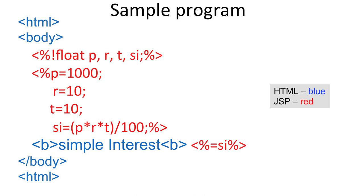After calculating the simple interest, we display it. The JSP parts are shown in red and the HTML parts in blue to differentiate them. Finally we write <%= si %> to display the calculated simple interest value. The body and HTML tags are then closed. This is a very simple JSP program that you can execute.